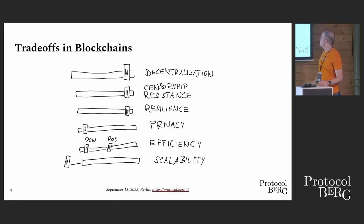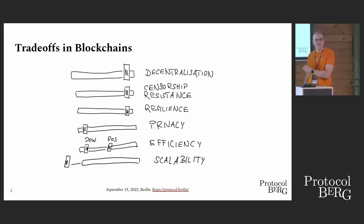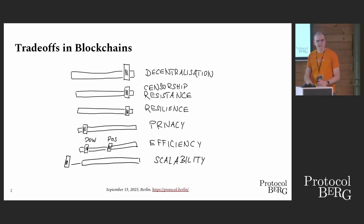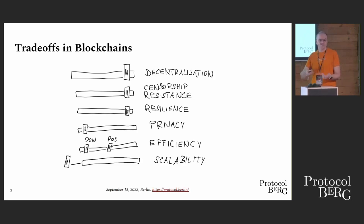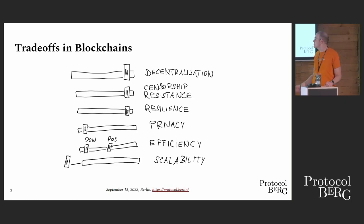When you look at blockchains and the trade-offs in designing and building them, the most important thing is decentralization — that's what gives you censorship resistance and resilience against nodes going down. That's the strong suit of blockchains. You pay a price for that in terms of privacy, efficiency, and scalability. Because arbitrary parties handle all the ledger work, by default everything is out in the open, so privacy is very low.